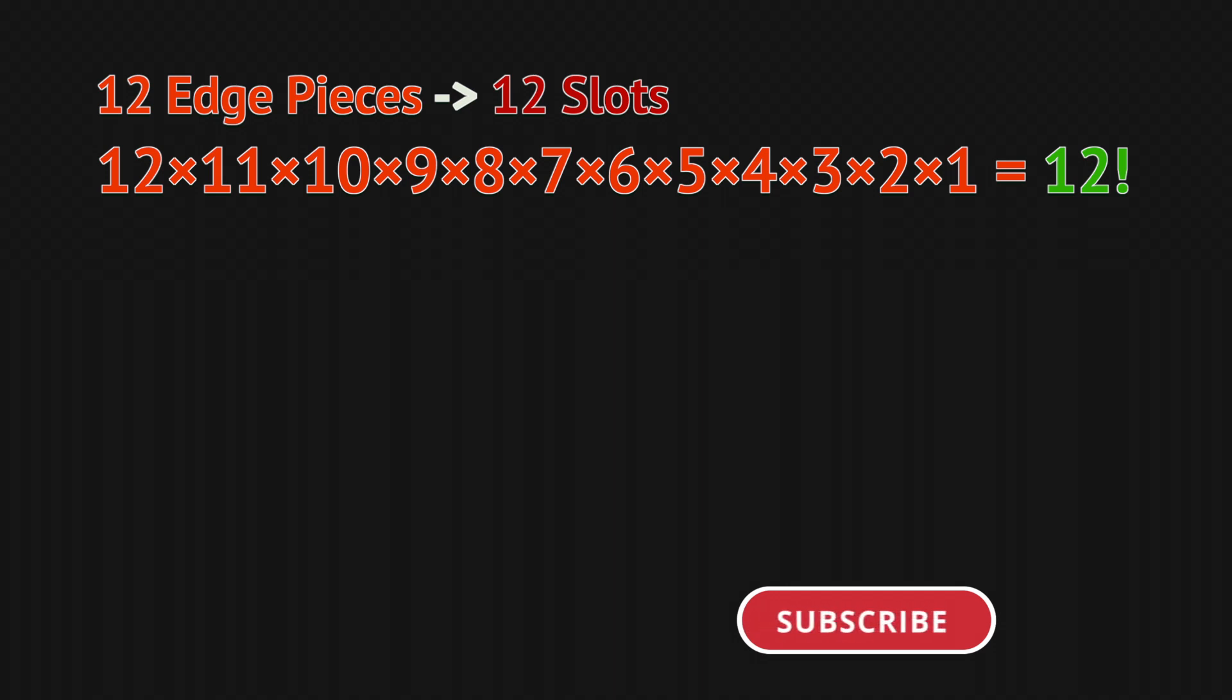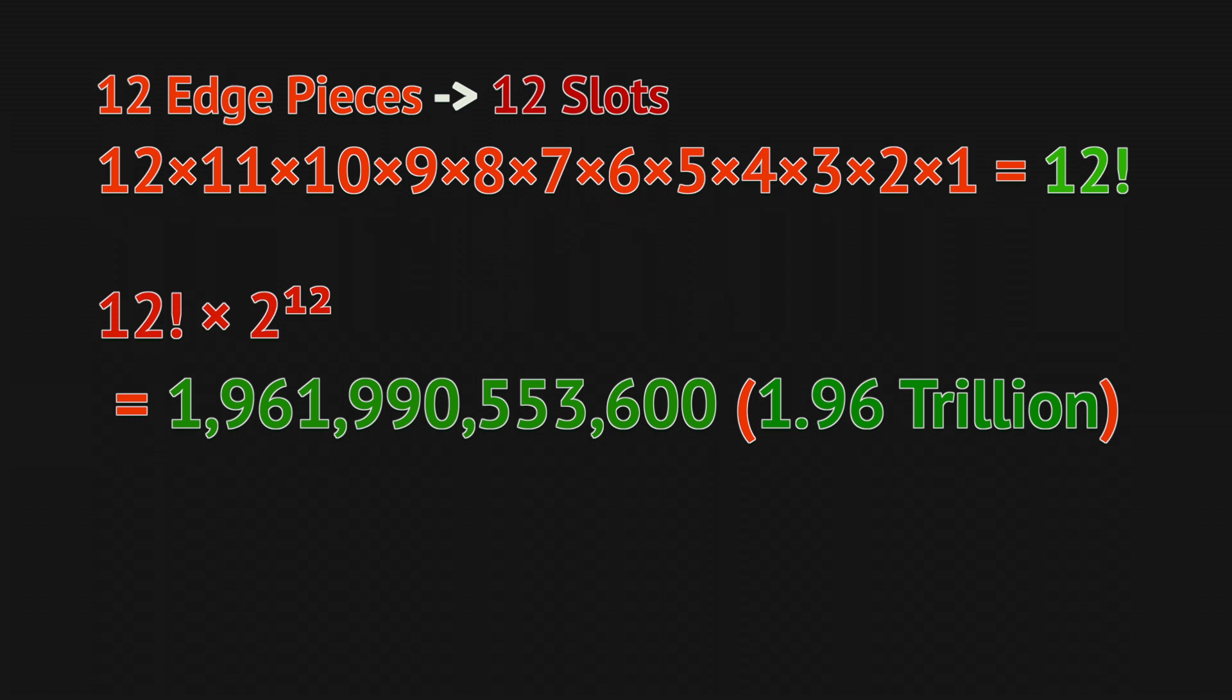But also remember that for every single edge, it could be flipped, which means that actually you need to multiply that number, 12 factorial, by 2 to the 12th power, because that shows you all the different cases if you have a flipped edge.